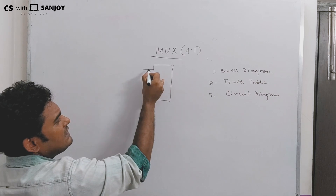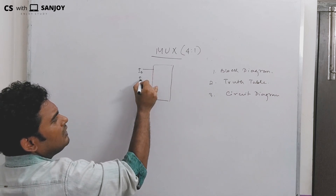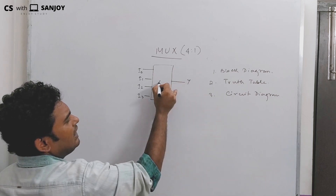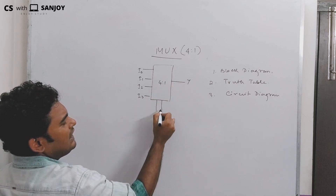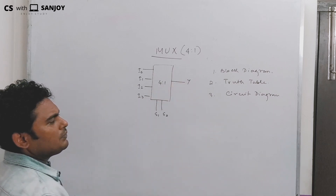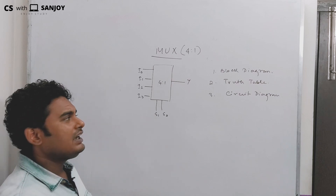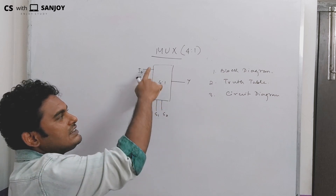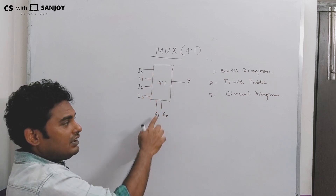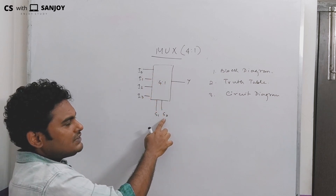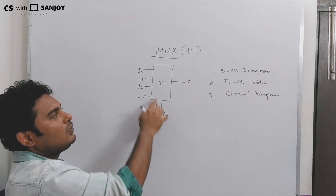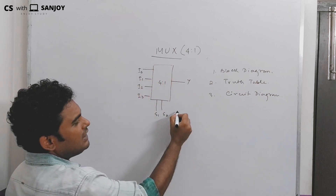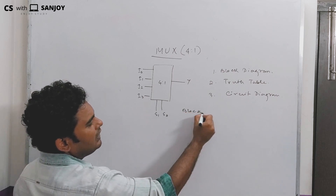The multiplexer is a combinational circuit and that is the function of the multiplexer. For the block diagram of the 4-to-1 MUX: inputs are I0, I1, I2, and I3, with one output Y, and select lines S1 and S0.